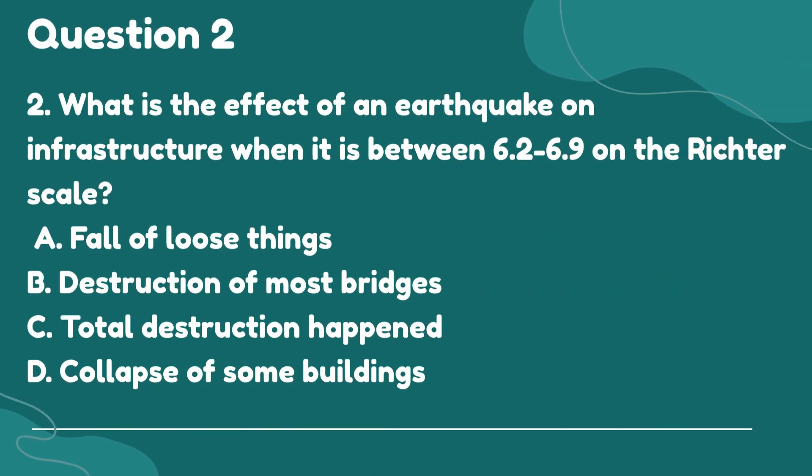Question 2. What is the effect of an earthquake on infrastructure when it is between 6.2 to 6.9 on the Richter scale? A. Fall of loose things. B. Destruction of most bridges. C. Total destruction happened. D. Collapse of some buildings.